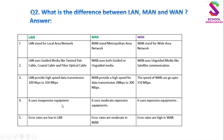चौथा difference — Cost (खर्च): LAN — it uses inexpensive equipment — यह बहुत सस्ते equipment उपयोग करता है। MAN — it uses moderate expensive equipment — यह मध्यम दर्जे के महंगे equipment उपयोग करता है। WAN — it uses expensive equipment, क्योंकि यह wireless transmission medium है और बहुत अधिक equipment का उपयोग करता है।